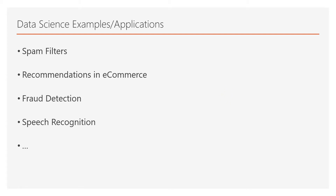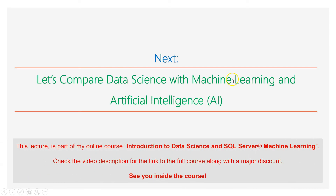You can see that data science is really important — it is already here, and it is a very important niche in the IT industry. In the next lecture, we're going to compare data science with machine learning and artificial intelligence, see their differences and similarities, and how each of these areas depends on another.